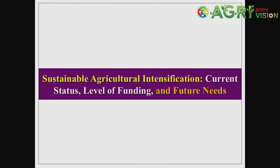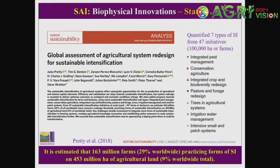In 2018, Dr. Jules Priddy — the father of sustainable intensification, who coined the term in 1995 — conducted a survey on the status of sustainable ag intensification globally. He looked at seven types: integrated pest management, conservation agriculture, irrigated crops, pasture and forage, redesigned trees, irrigation water management, and intensive small patches like horticulture. It was estimated that 163 million farms — 29% of the world — are practicing some form of sustainable ag intensification on 453 million hectares, which is 9% of worldwide farmland.